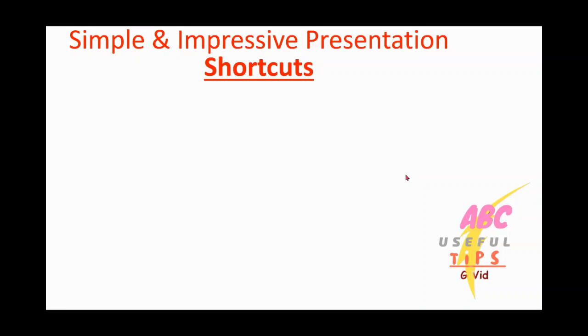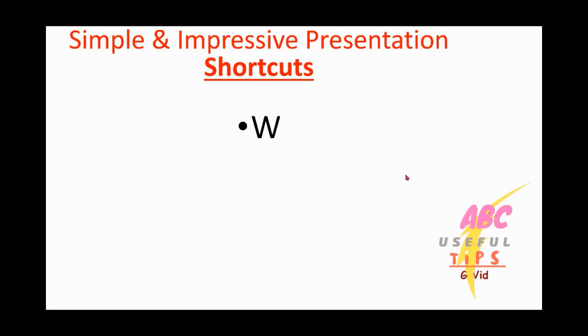First shortcut: W. Sometimes when you're presenting, you would like the audience to concentrate on you or what you're saying, not on the screen. What you can do is just click W and your screen will turn white, so they will not be looking at the wordings on it. If you want to bring back your screen, just press W again and the presentation will be back.